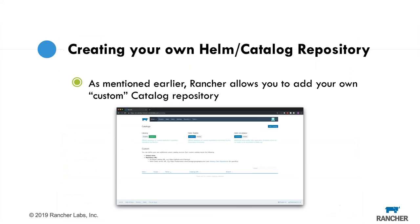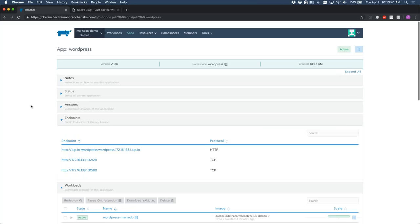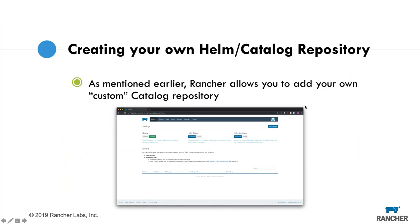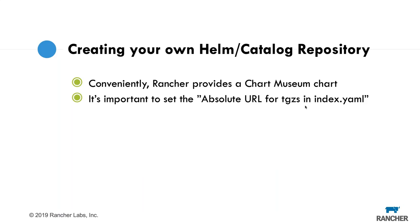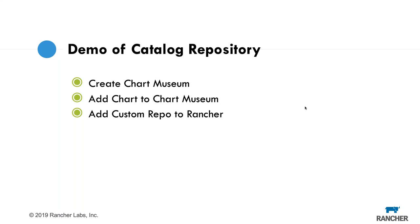Going back to the presentation — you can create your own Helm and catalog repositories. Rancher allows you to add your own custom catalog repository. Conveniently, Rancher provides a Chart Museum chart from within its library. Something important to note: if you've tried using Chart Museum with Rancher and found a spinning version wheel that never loads, it's because it's not able to load the tarballs. It's actually really important to set the absolute URL for tarballs in the index.yaml, otherwise you'll run into problems with Rancher.